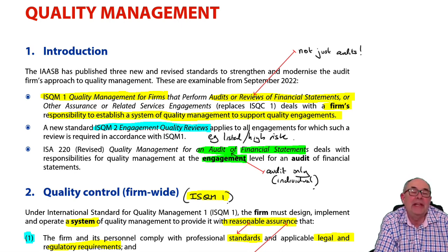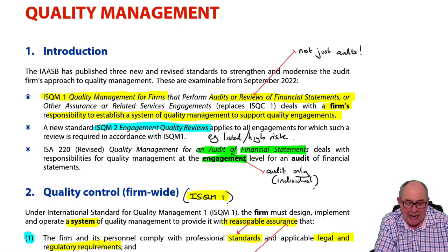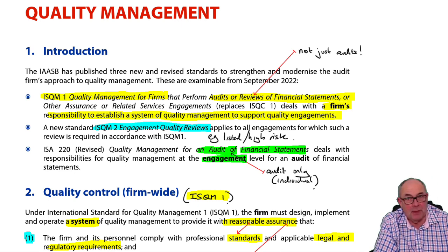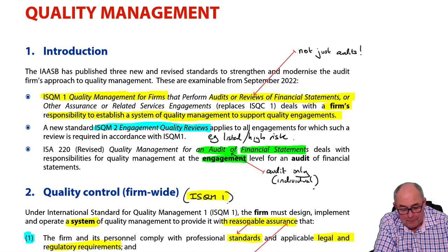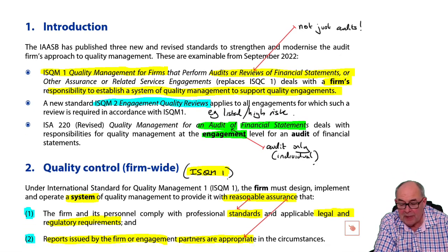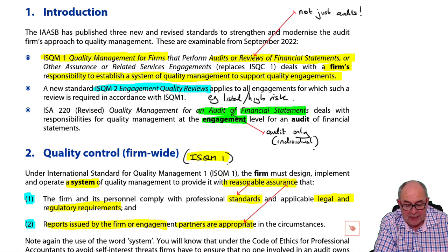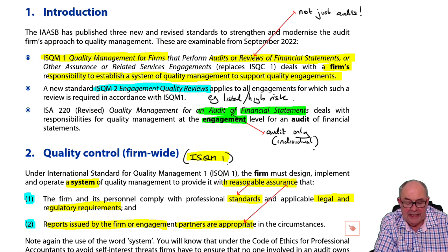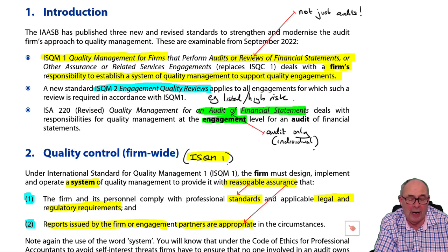There are three standards that affect quality management. Notice the word is management, not control. The three standards are, first of all, ISQM 1 and 2 — International Standard on Quality Management 1 and 2.